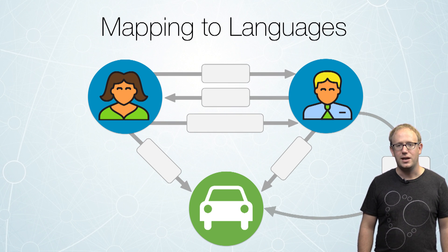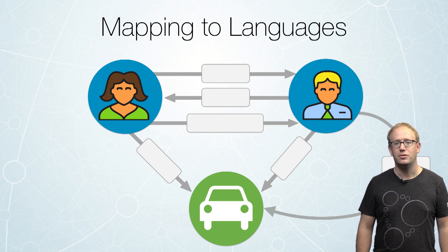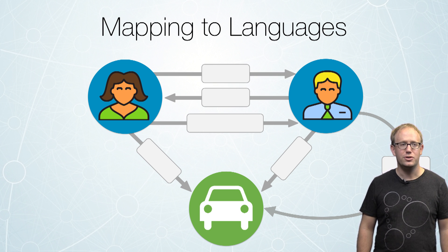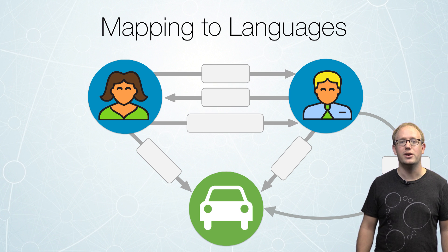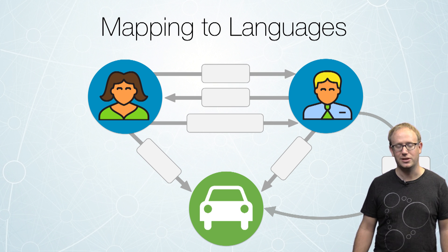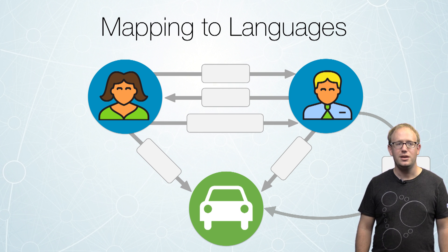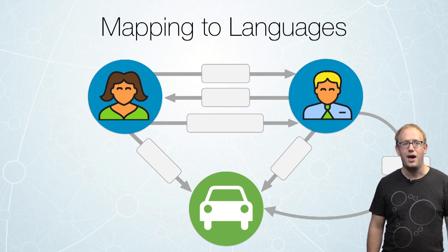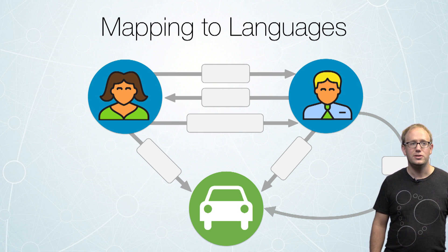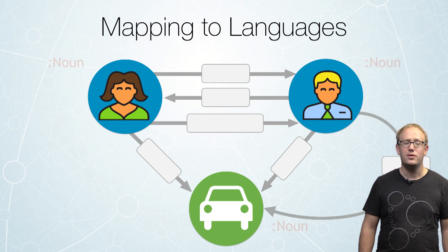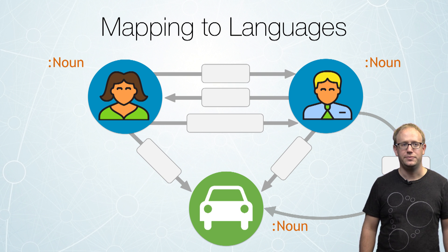We like to say that you're representing the real world with your graph model. And because you're representing the real world, you can use the English language — or whatever other spoken language you have — to talk about these objects. In this case, we have our nodes, and those nodes are the nouns in our language.